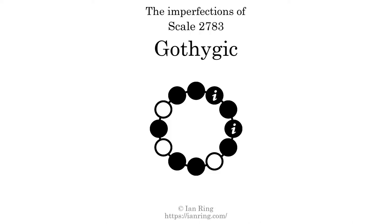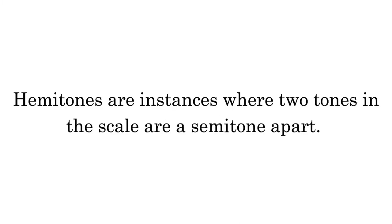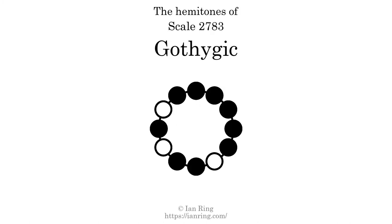This scale has two imperfections. They are at positions here and here. Hemitones are instances where two tones in the scale are a semitone apart. This scale has six hemitones.